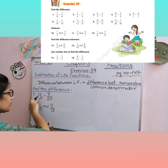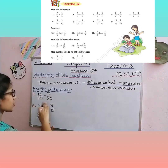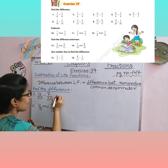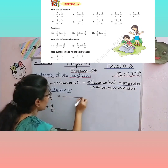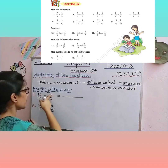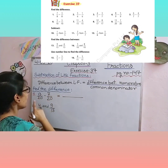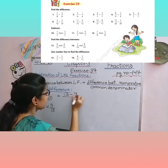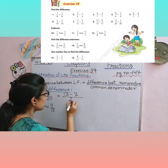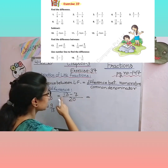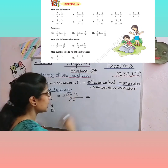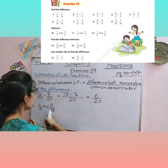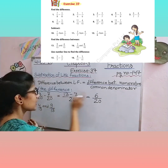Find the difference — question number 9: 13/20 minus 7/20. Aapko pata hai hum subtraction do numbers ke beech mein karte hain, toh sirf do fractions ek saath honge. Ab isse apne formula pe based rakhate hain. Difference between the numerators — bade number mein se chote number ko subtract karte hain: 13 minus 7. Common denominator: 20. Answer: 6 upon 20.